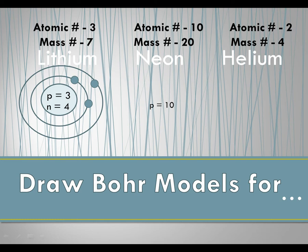Now let's do neon. Neon has 10 protons — we know that because the atomic number is 10. The mass number is 20, so the neutrons is 20 minus 10, which is 10. Here is our nucleus, and our number of electrons is equal to our protons, so we have 10 electrons.